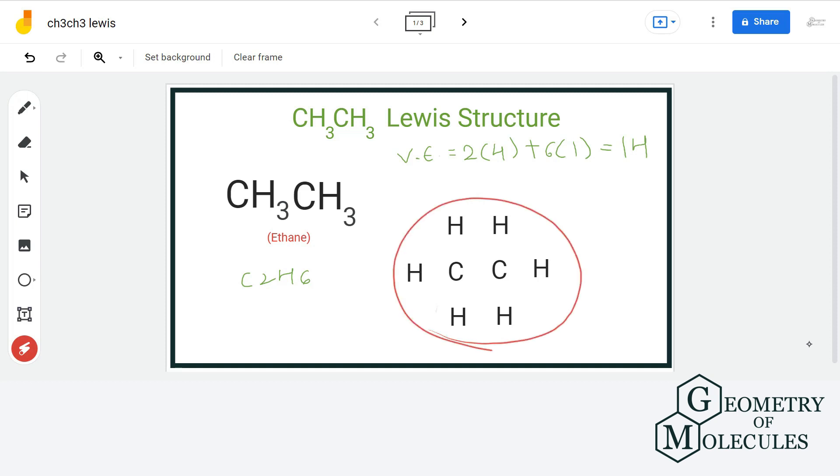Let us see the arrangement of atoms. The atoms will be arranged somewhat like this, and it's quite simple. If you remember the chemical formula, you can easily arrange the atoms. If you remember the structure of ethane as CH3CH3, arranging them becomes even easier.